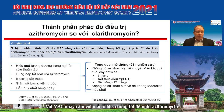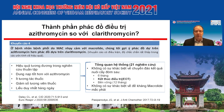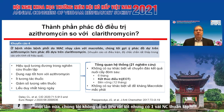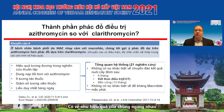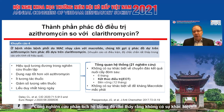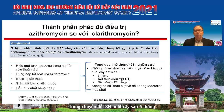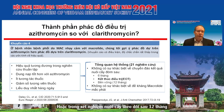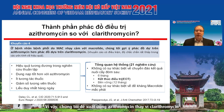Which macrolide? In macrolide-susceptible MAC pulmonary disease, we suggest azithromycin rather than clarithromycin. While efficacy appears equal in cohort studies, azithromycin is better tolerated, has fewer drug interactions, lower pill burden, and allows single daily dosing. The same systematic review showed no difference in sputum culture conversion at six months, at end of therapy, or in sustained culture conversion at 12 months, and no difference in acquired macrolide resistance. So we recommend azithromycin over clarithromycin.